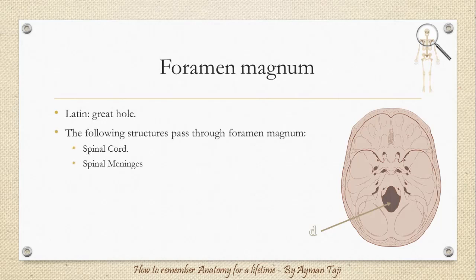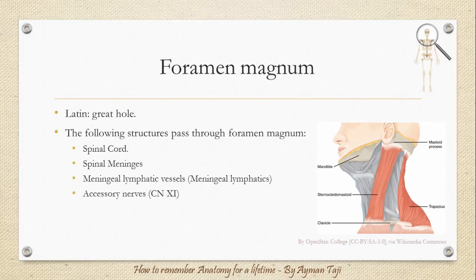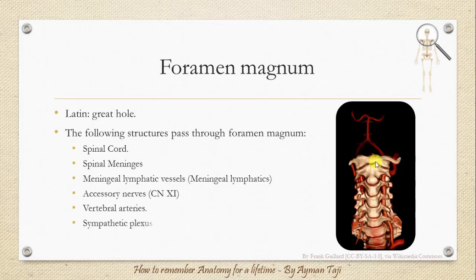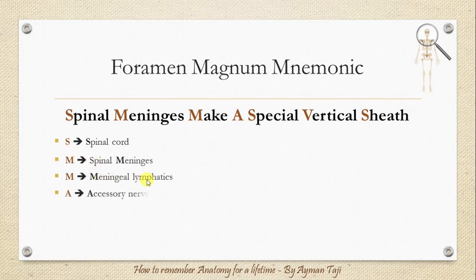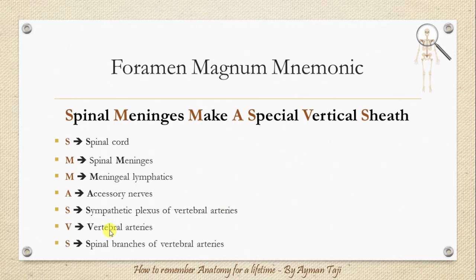Structures passing through the foramen magnum include: the spinal cord and spinal meninges, meningeal lymphatic vessels, the accessory nerve (11th cranial nerve) which innervates the sternocleidomastoid and trapezius muscles, the two vertebral arteries with their sympathetic plexus, and the spinal branches of the vertebral arteries. To remember them, use the mnemonic: 'Spinal meninges make a special vertical sheath' — S for spinal cord, spinal meninges and meningeal lymphatics, then accessory nerves, sympathetic plexus, vertebral arteries, and spinal branches.